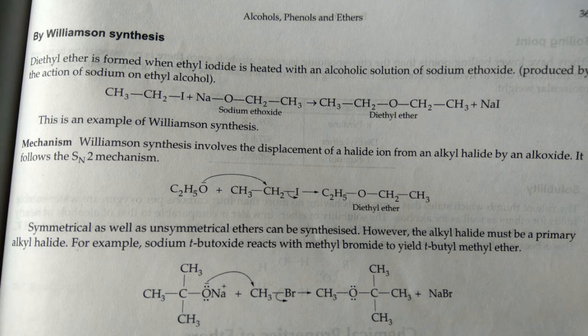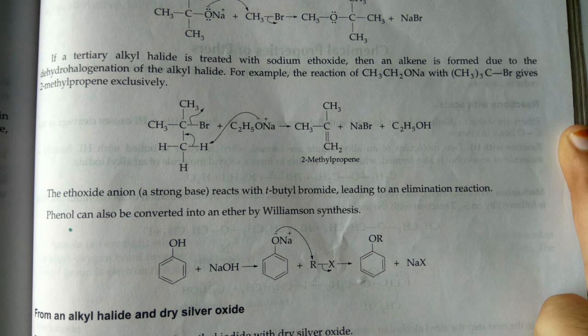To make an unsymmetrical ether, you take a different alkyl halide and a different sodium alkoxide. The NaX byproduct is removed and the resultant is the unsymmetrical ether. That is the preparation given here.